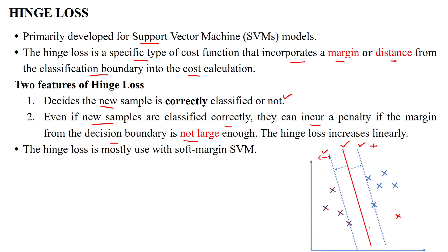For example, when a new sample is placed very close to the decision boundary, the distance between the decision boundary and the new sample is very small. The hinge loss for that particular data point will be more. Whenever we have a very small or not large enough distance, the hinge loss plays a major role to increase the distance between the sample and the decision boundary.